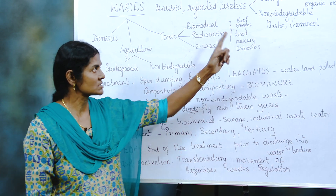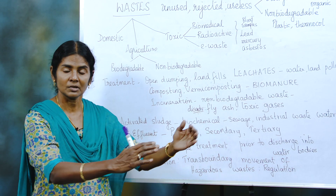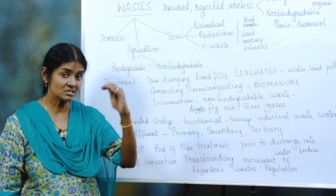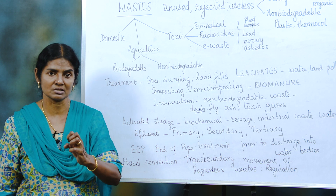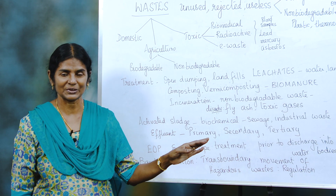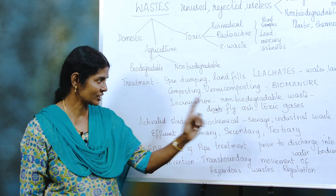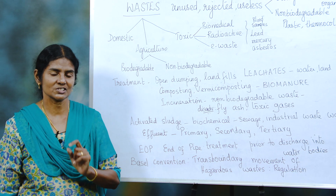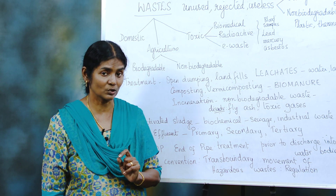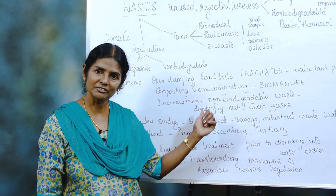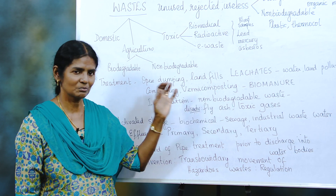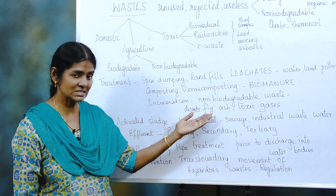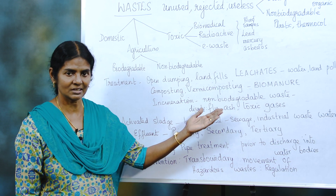Incineration — sometimes non-biodegradable waste piles up and occupies so much space. Incineration brings down the volume of waste to 25%, so 75% is completely broken down. It is burnt at very high temperature and is useful for non-biodegradable waste. The method used for non-biodegradable waste is incineration. But everything has a disadvantage — the poisonous gases released and a lot of fly ash that comes out of incinerators is the downside.